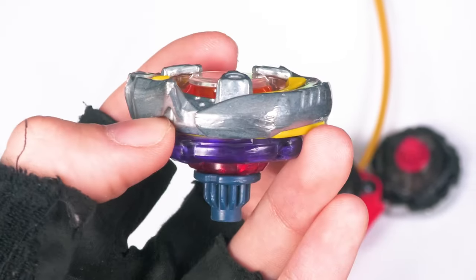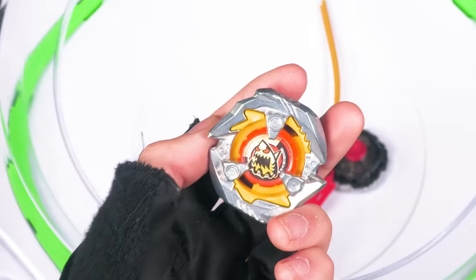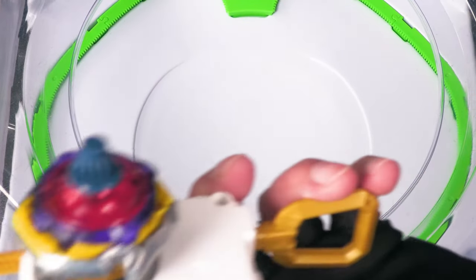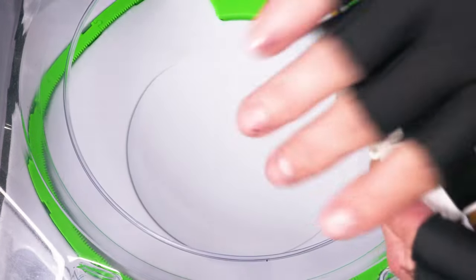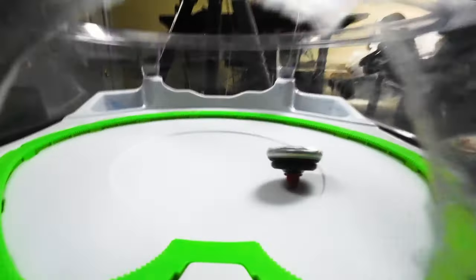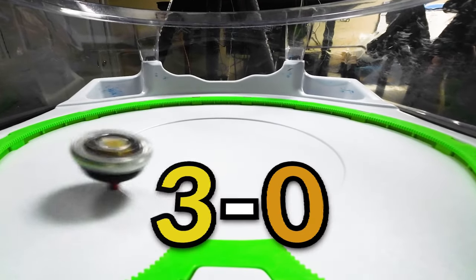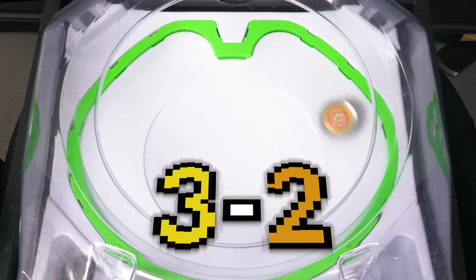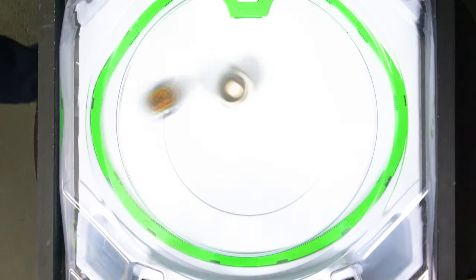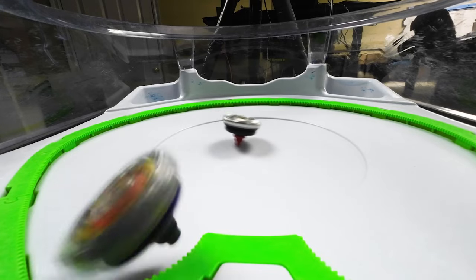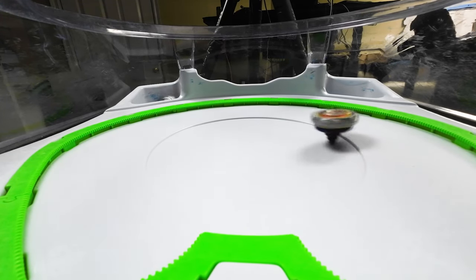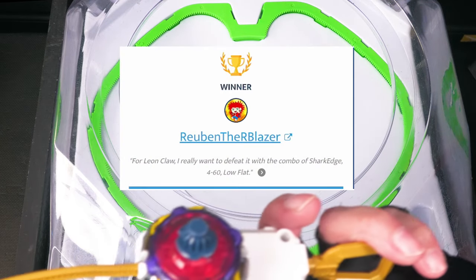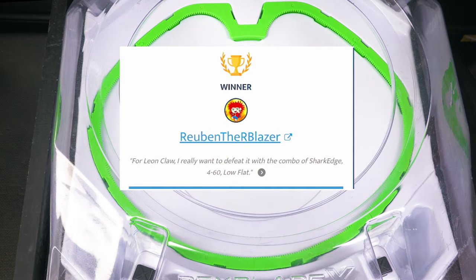Okay, and for our next combo we have Shark 4-60 low flat. So will Shark be able to win? We're going to find out. Three, two, one. First point is mine. Damn. Three, two, one. Awesome. Alrighty, shout out to Ruben the Blazer. You made a combo that could win.